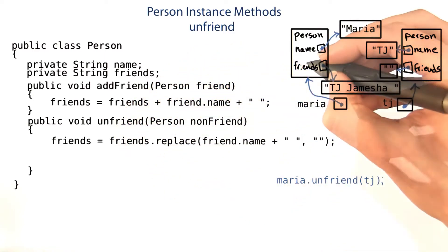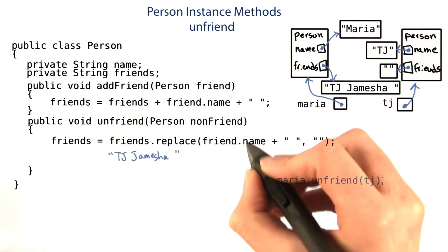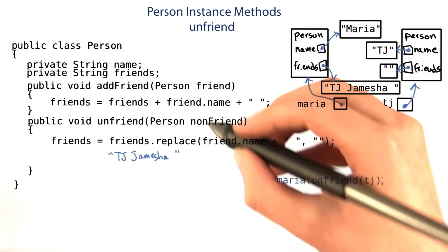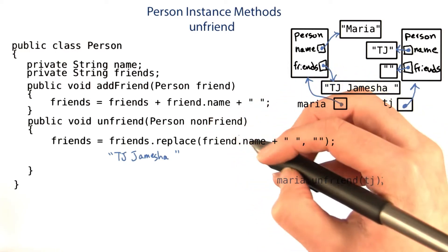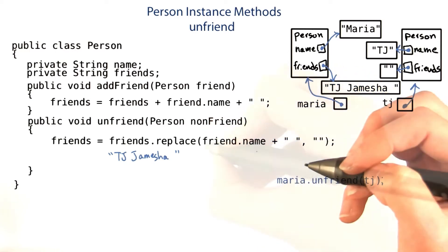Friends is initially TJ Jamisha, and friend.name, oops, that's actually an error. It should be non-friend.name. Do you think that's a compile time error, or a runtime error? For now, I'll just fix it.